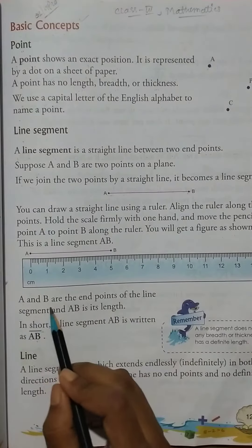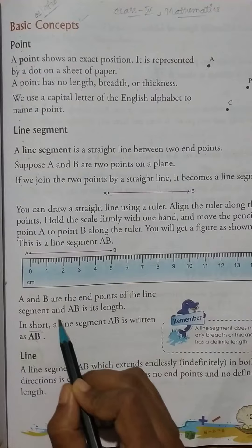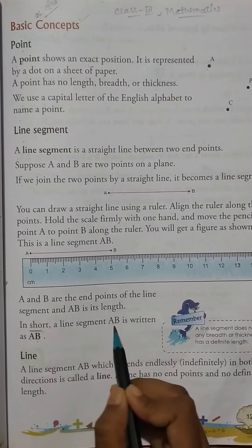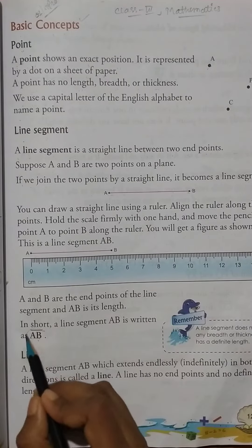Then A and B are the end points of the line segment and AB is its length. In short, a line segment AB is written as line.